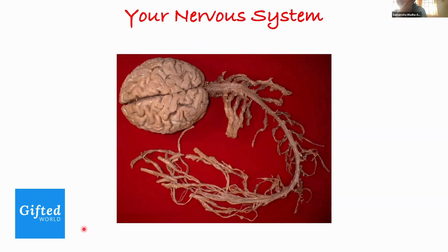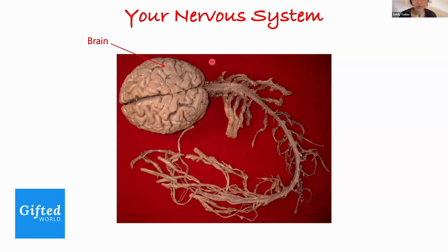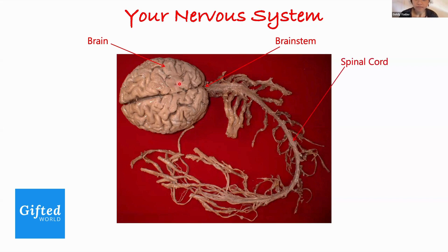The brain doesn't work in a standalone manner — it's connected to other parts of the body via nerves. If you take out the entire nervous system and display it, you'd see the brain on top, the brainstem underneath, and then the spinal cord running all the way from your neck down to the end of your back. From the spinal cord, projections branch out to innervate every muscle of your body, and that's how the brain sends information to different body parts.